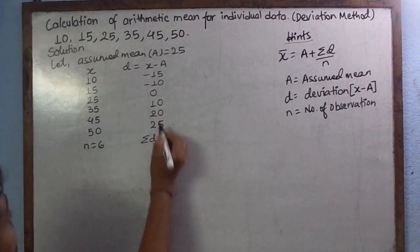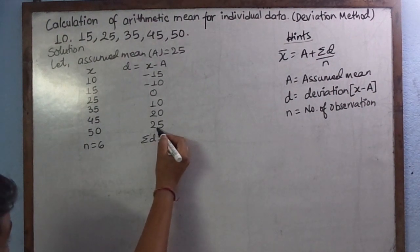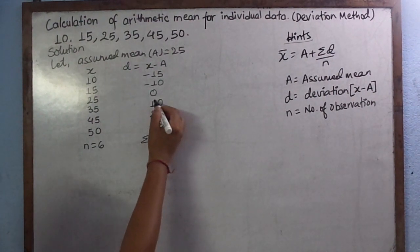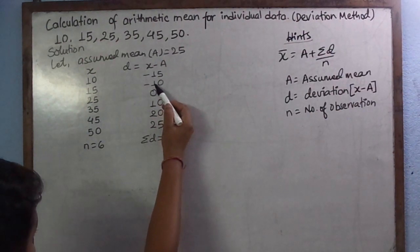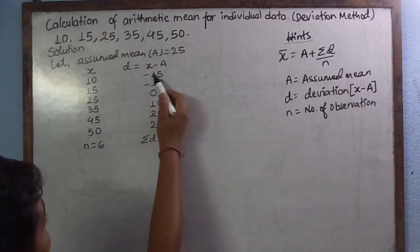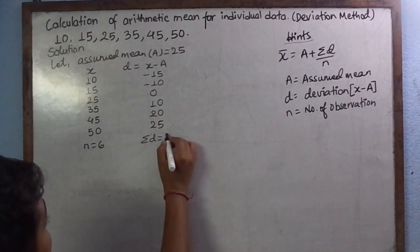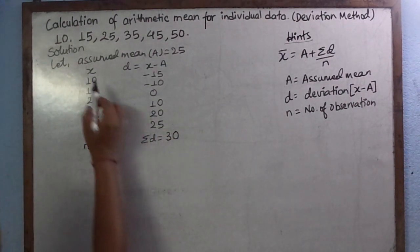Now summation of D: 25 plus 20 is 45, 45 plus 10 is 55, 55 plus 0 is 55, 55 minus 10 is 45, 45 minus 15 is 30.